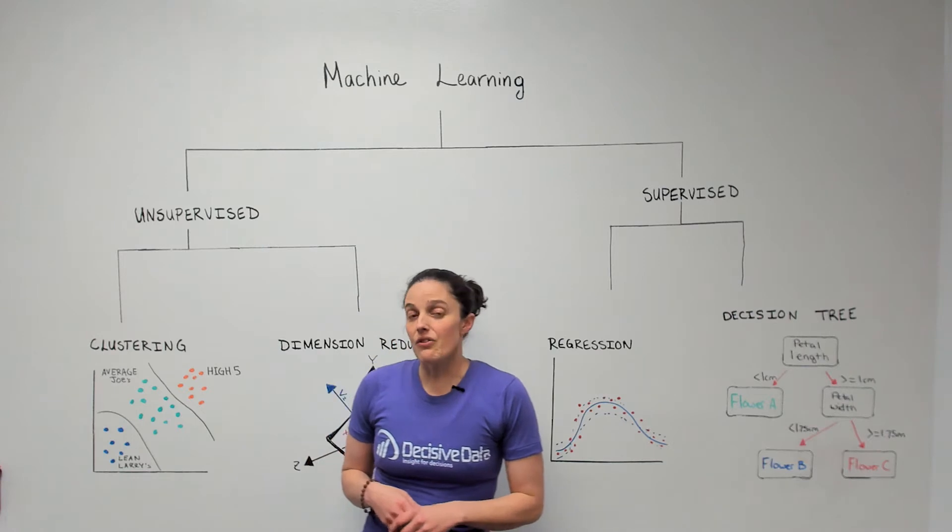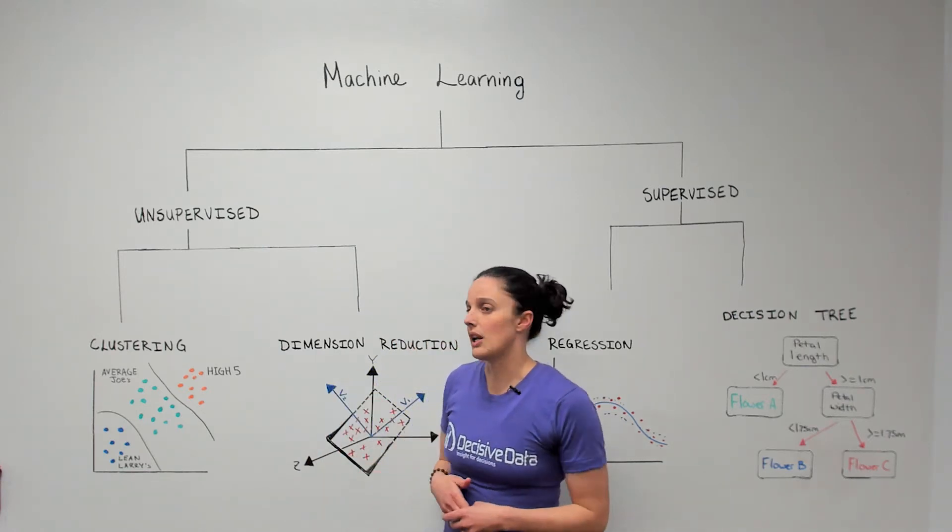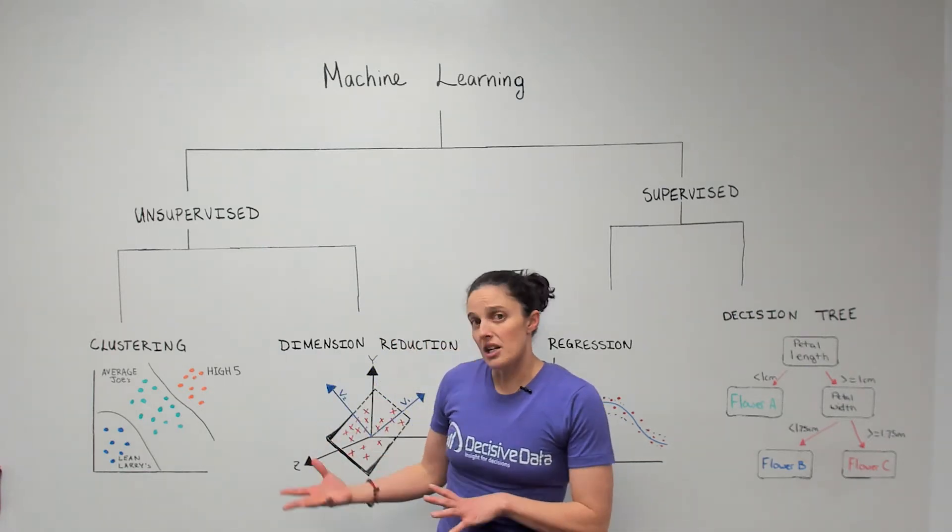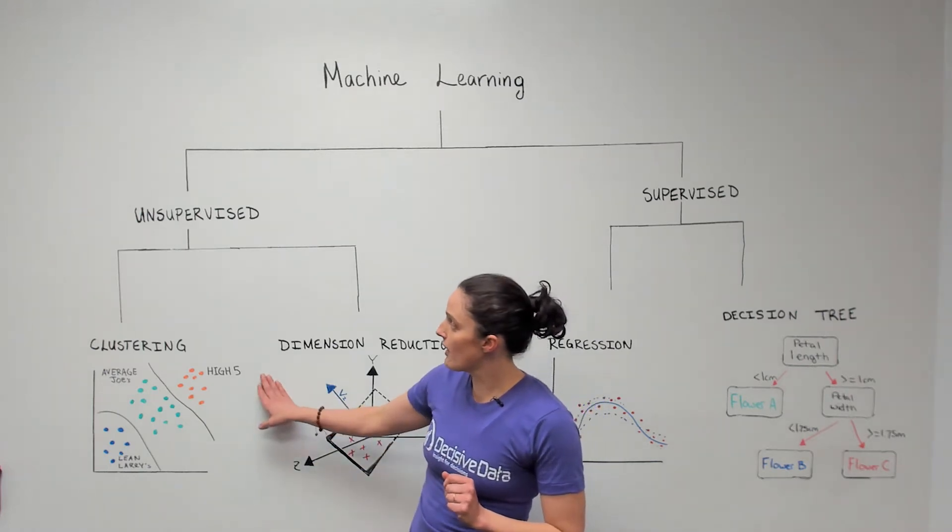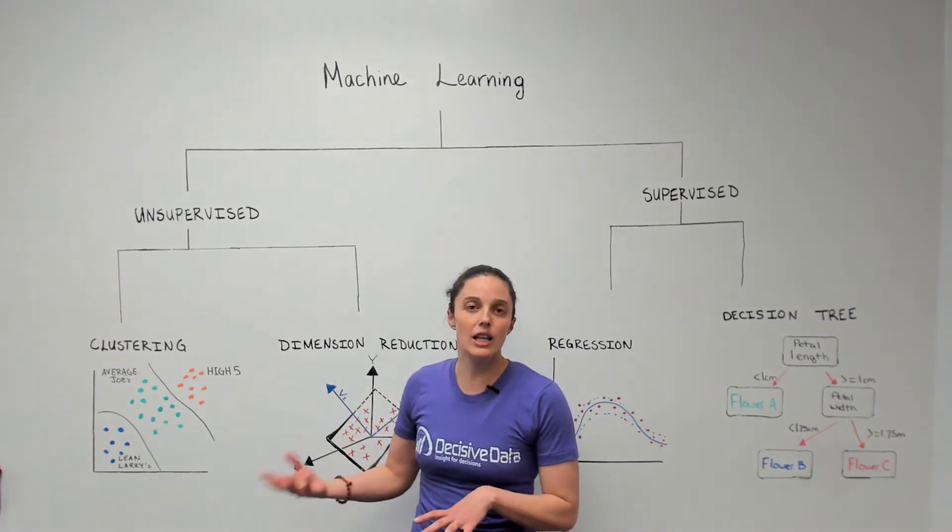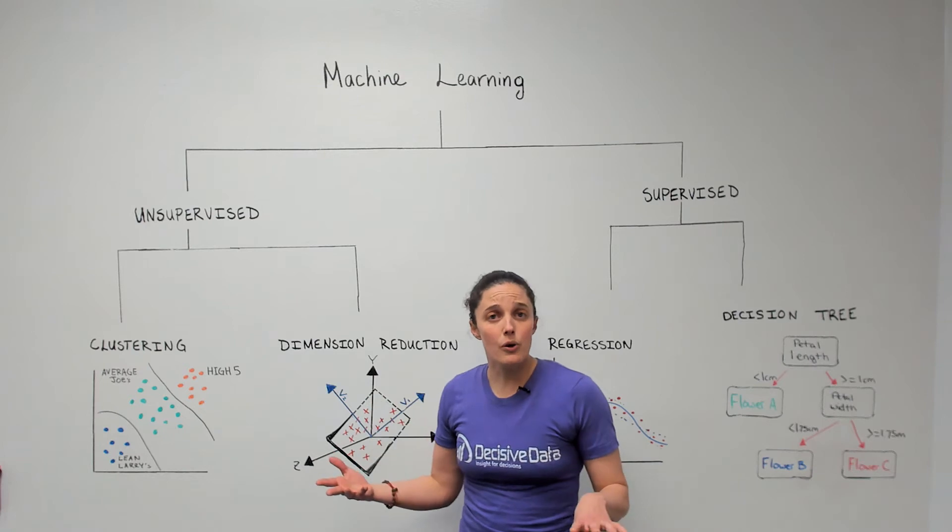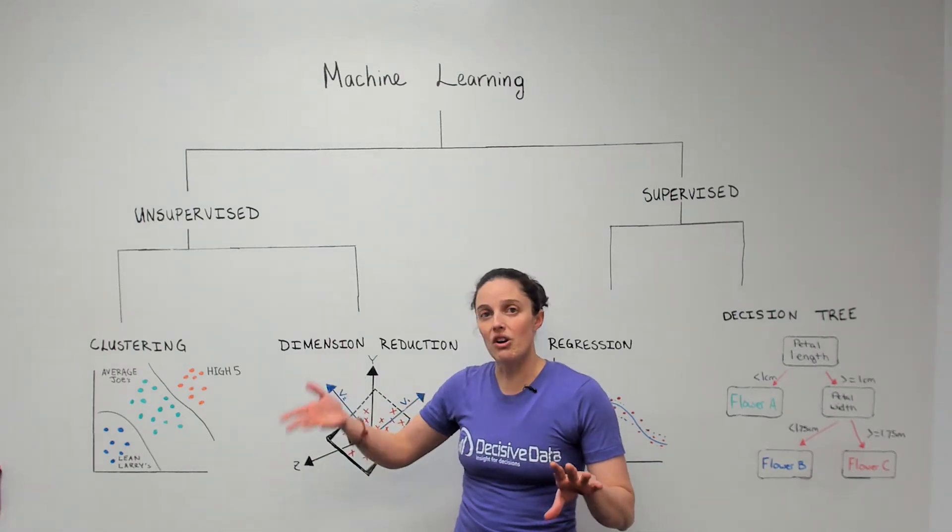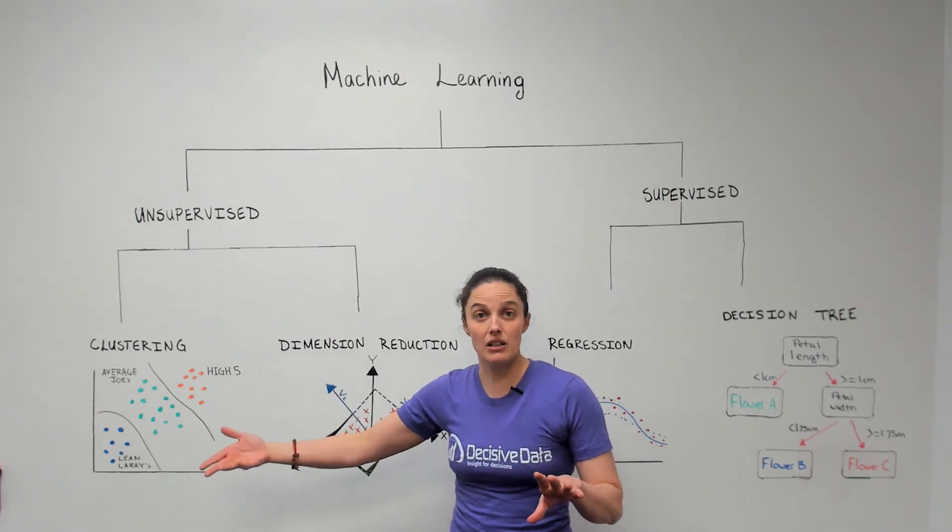The basic difference between these two has to do with the data that we're inputting into the model and our objectives going out. Unsupervised machine learning is when we have unlabeled data. We have a lot of variables but we don't necessarily know where they fall in terms of what our objective is.